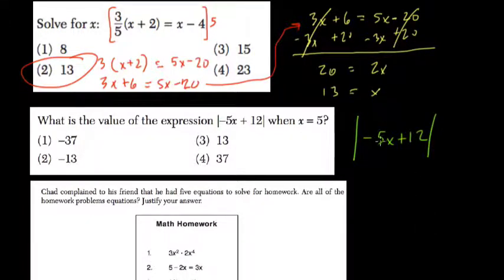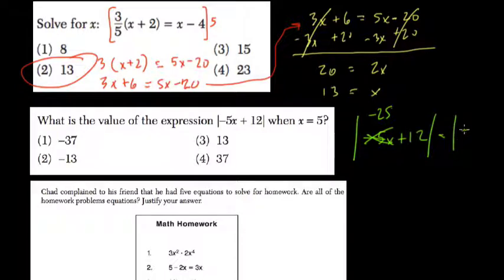Well, 5 times negative 5 — that's negative 25. Plus 12 — that's negative 13.